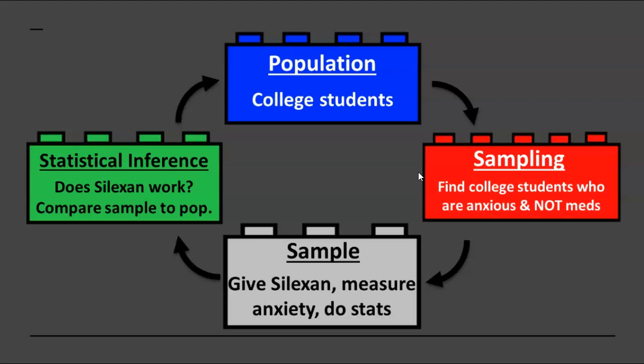We do not want anyone already taking anti-anxiety medication in our sample because it would skew the results. We will then give this sample Silexan 160 milligrams daily for eight weeks and then have the sample take, let's say, the Beck anxiety inventory to determine their anxiety levels.